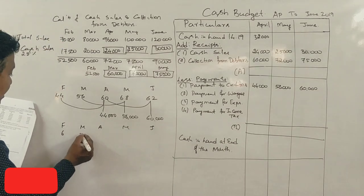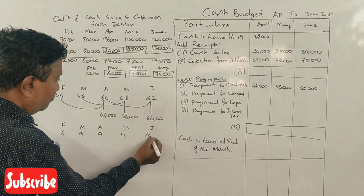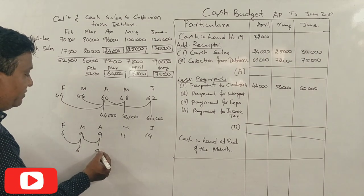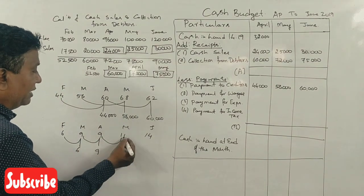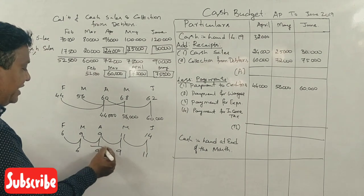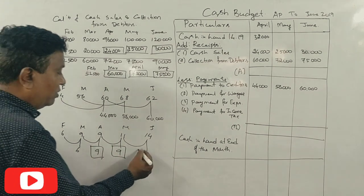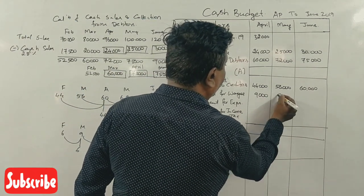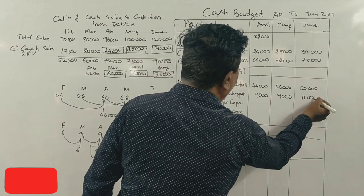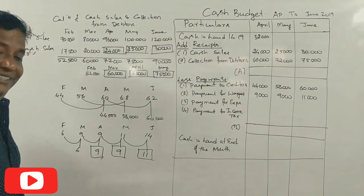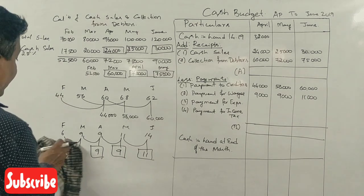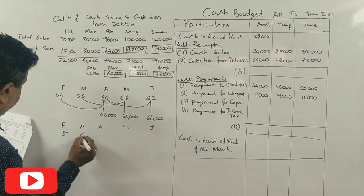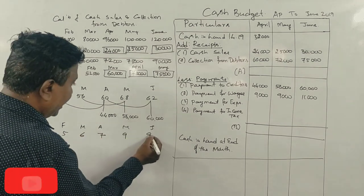The wages figures are: 10,000; 9,000; 9,000; 11,000; 14,000 for February, March, April, May, June respectively. For April, May, June the wages payments are 9,000; 11,000; 14,000. Now, expenses: the figures are 5,000; 6,000; 7,000; 9,000; 9,000 for February through June. For April, May, June the expenses are 6,000; 7,000; 9,000.